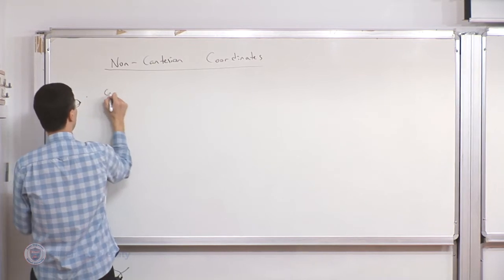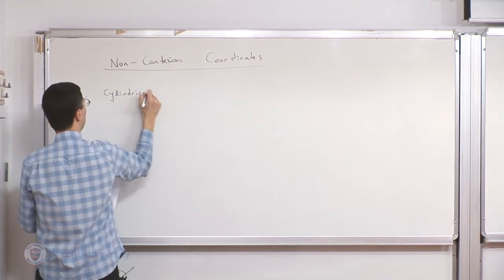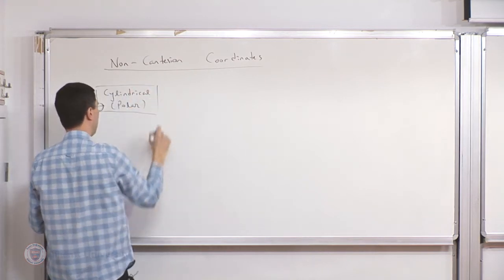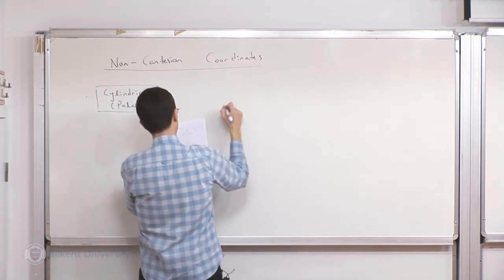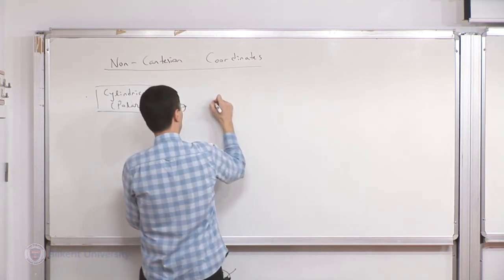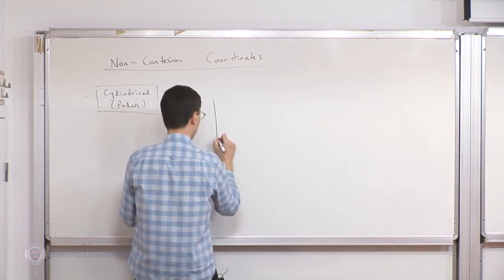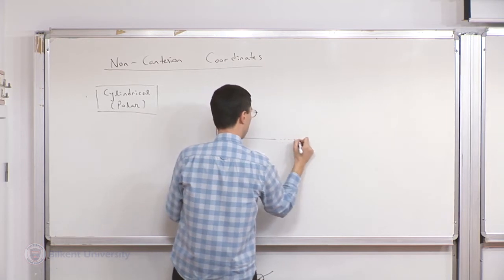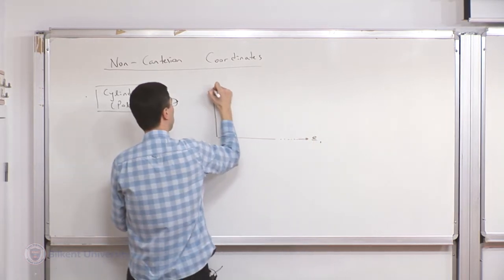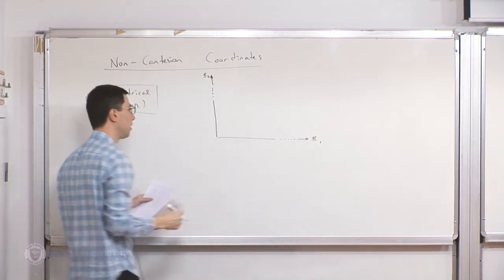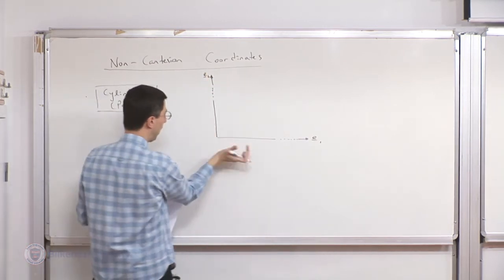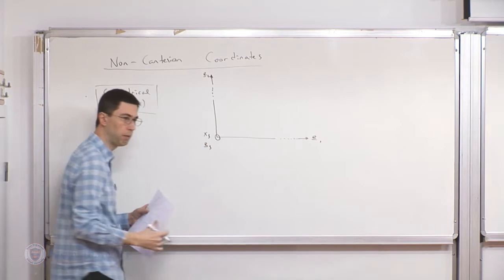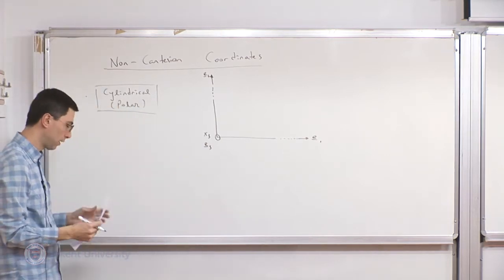The first one is the cylindrical or polar coordinate system. The notation I will use is as follows. Let's first draw the Cartesian coordinate system. I have x1 and x2, essentially defined by their corresponding basis vectors e1 and e2, and through the right-hand rule the out-of-plane direction would be x3, accompanied by the basis vector e3.